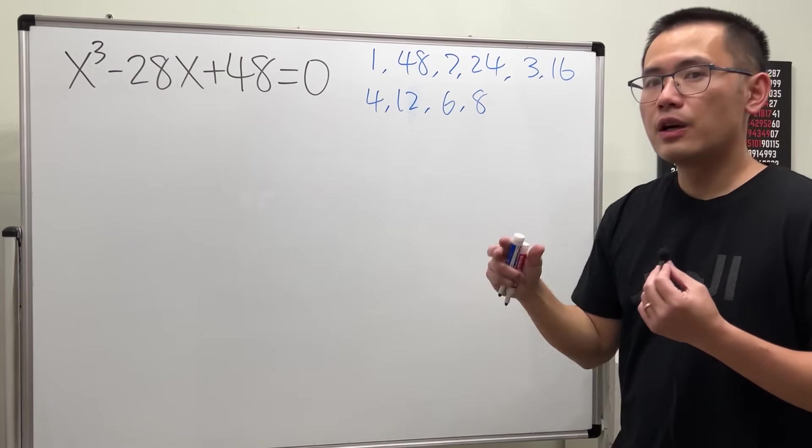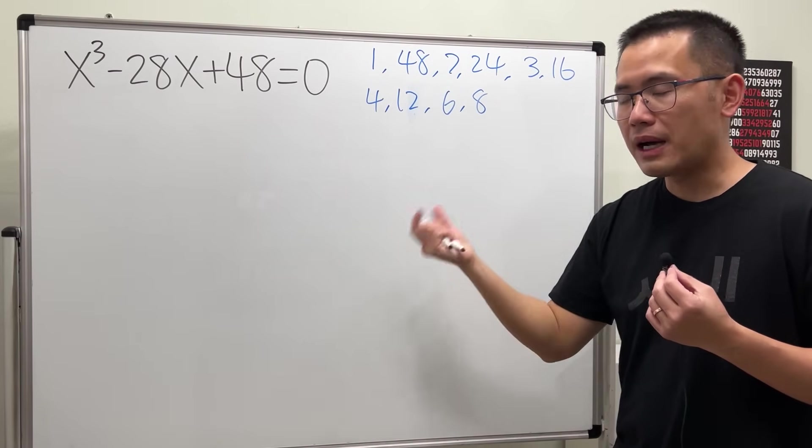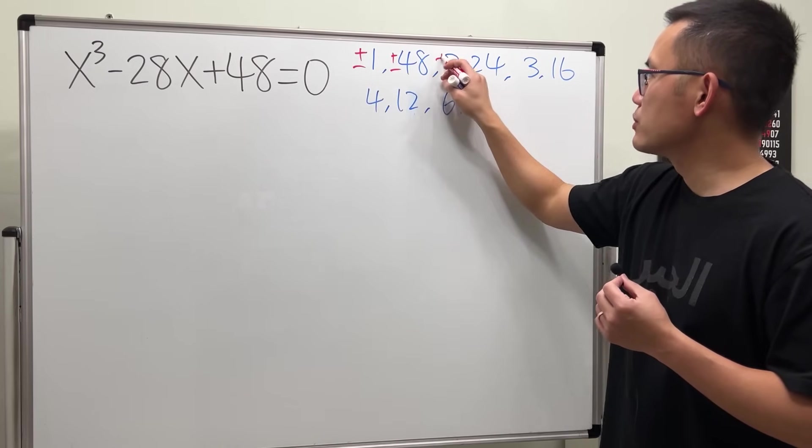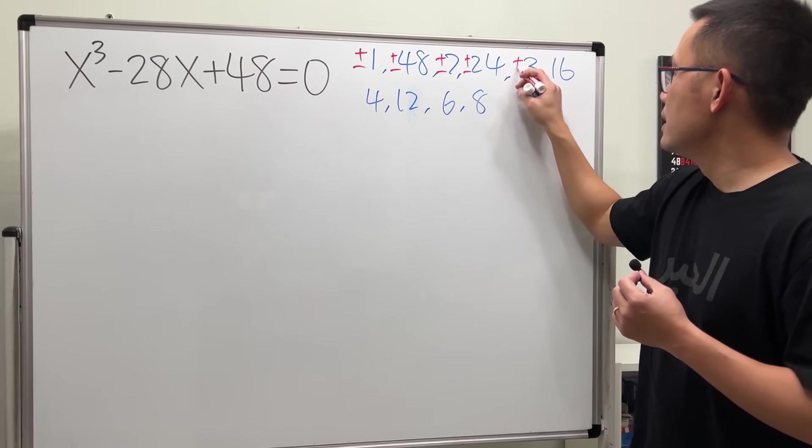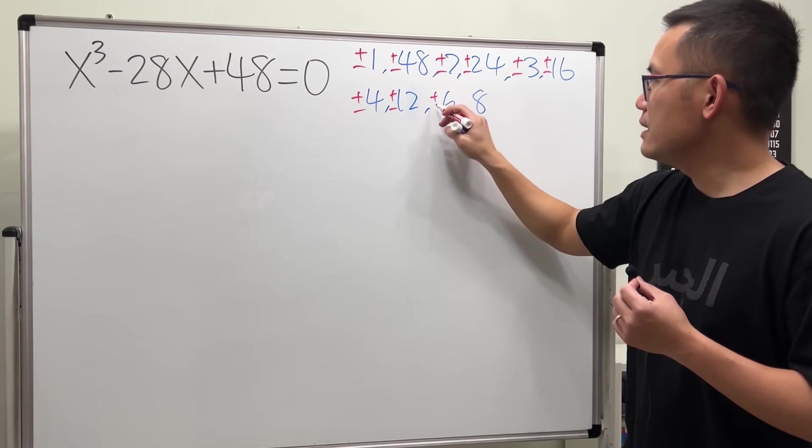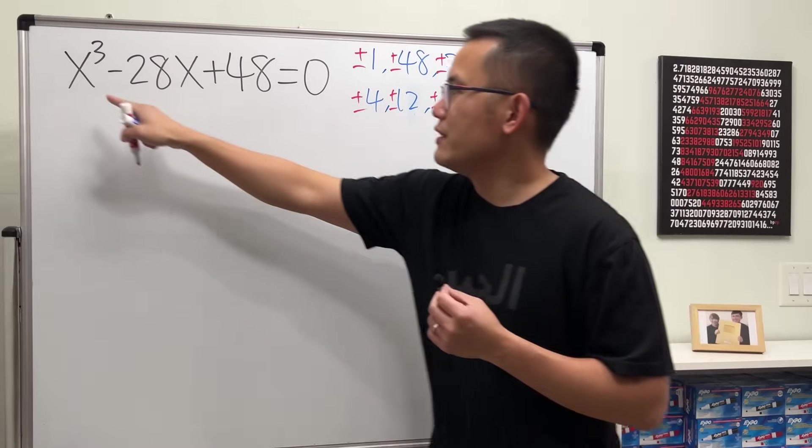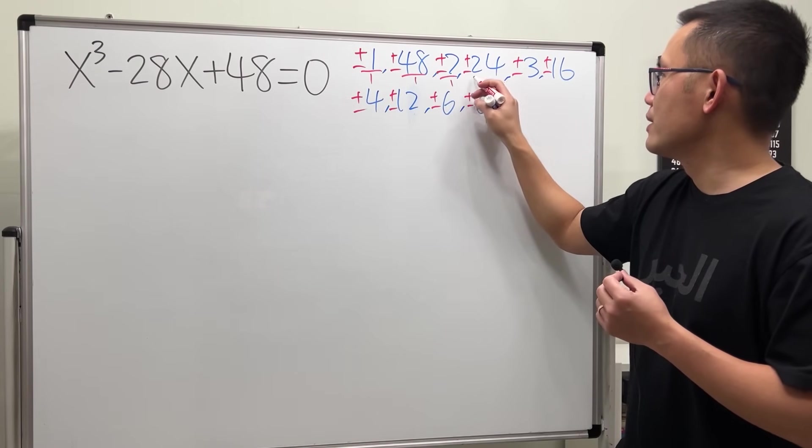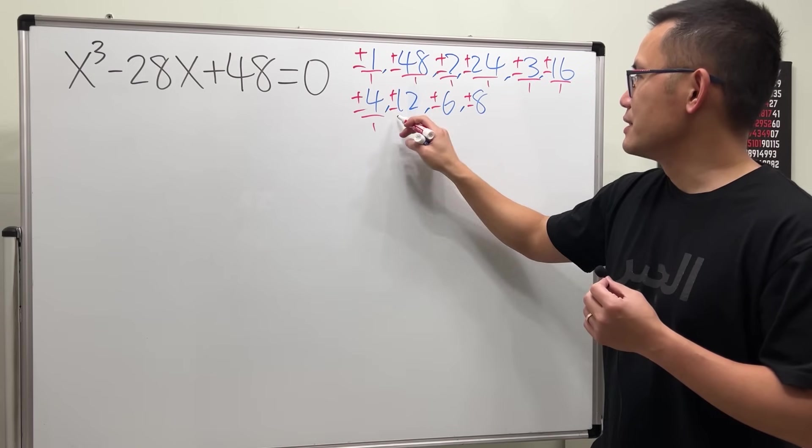Now these are the factors. We are going to consider both positive and also the negative version of them, so plus or minus, plus or minus, plus or minus all that. And technically we should also have divided by the one, but divided by one doesn't matter.